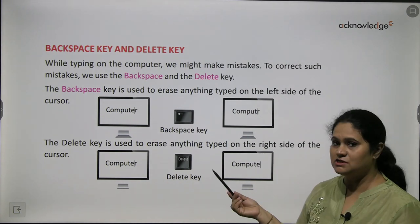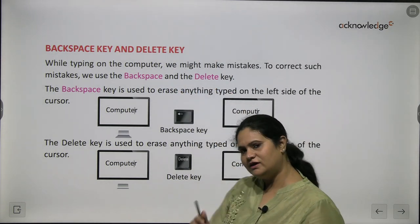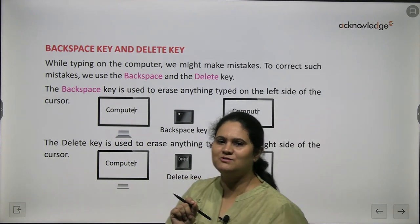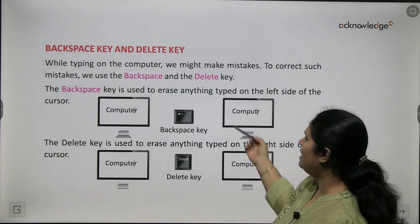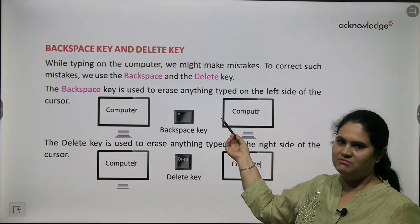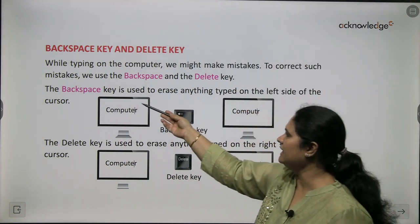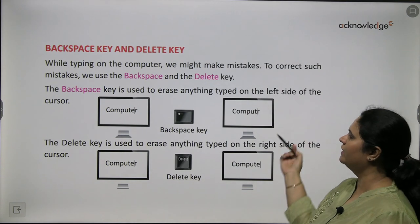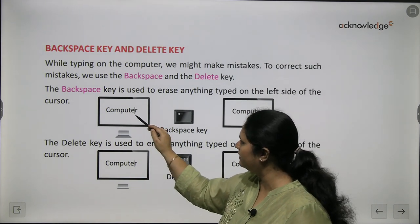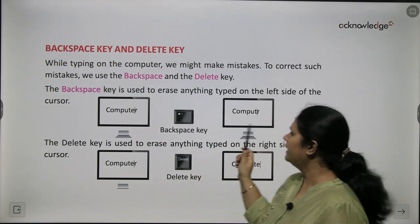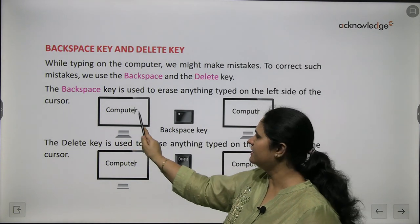There are some special keys also on the keyboard. You might have noticed that whenever you write, sometimes you make mistakes. Just like you use an eraser, while typing on the computer we might also make mistakes. For this purpose, we have the backspace and the delete key. The backspace key erases anything on the left side of the cursor. See here — with the cursor placed after a letter, when I press the backspace key, it erases the letter to the left of the cursor.